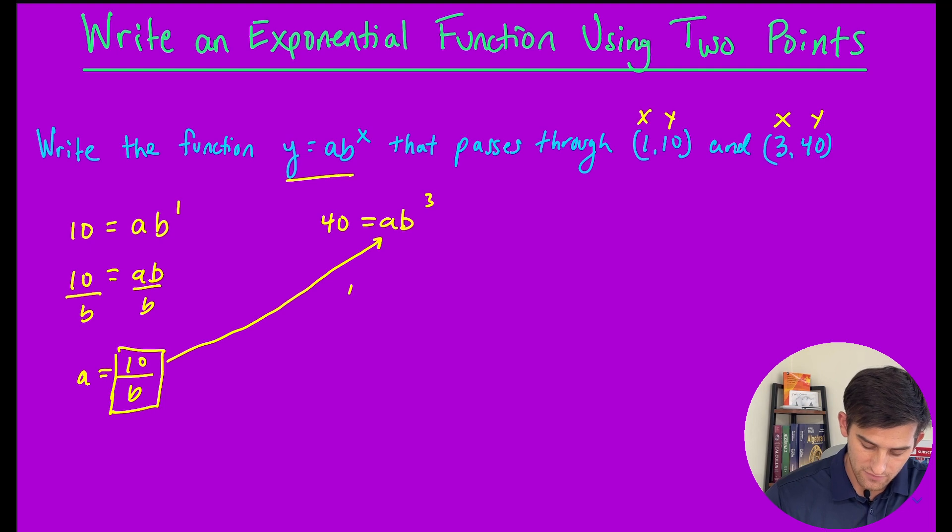Now we have 40 equals 10 divided by b times b cubed.